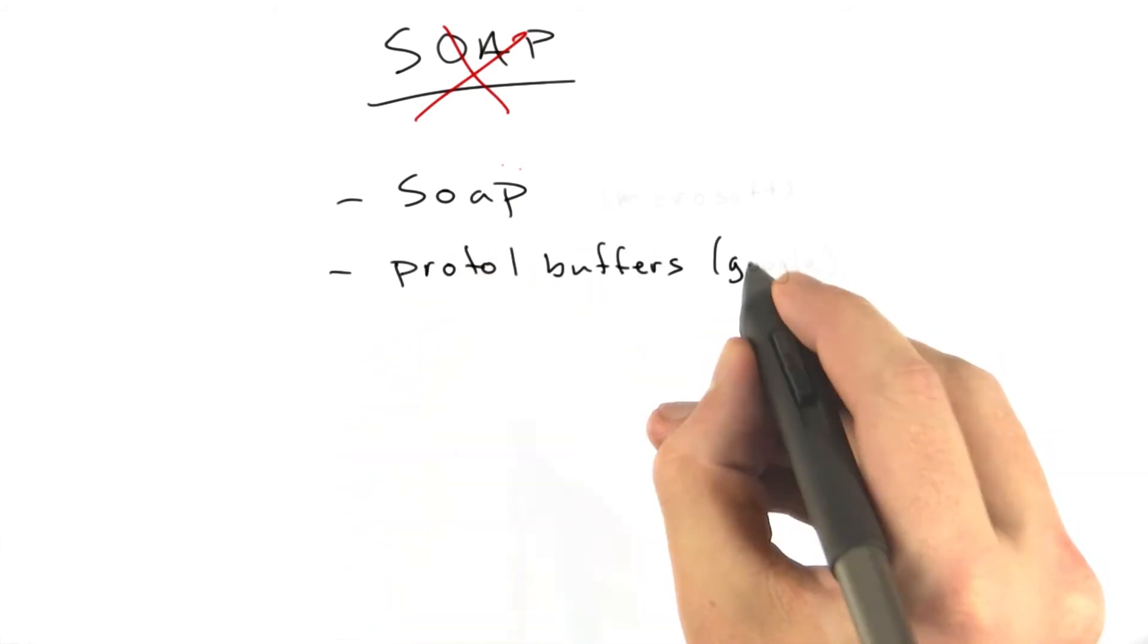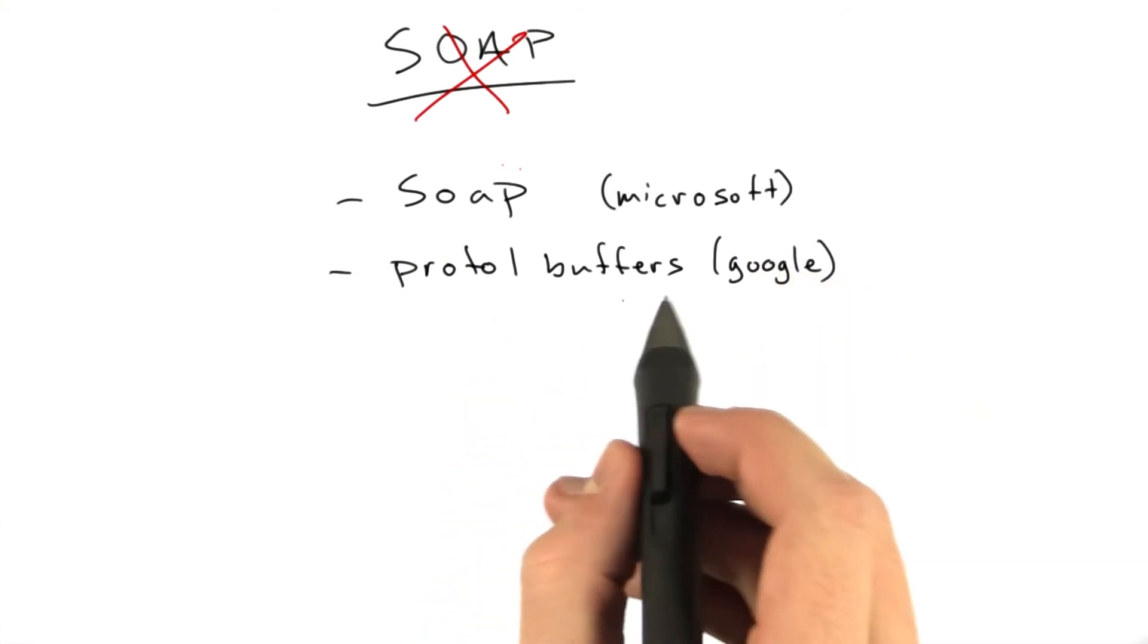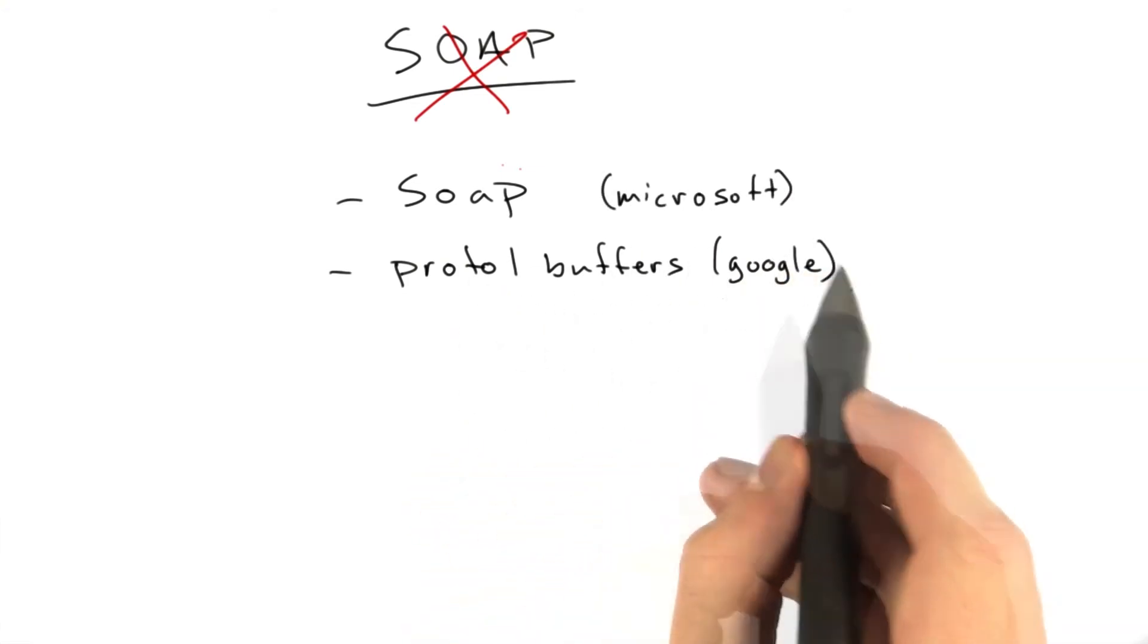We've got protocol buffers, which are from Google. It's similar in concept to JSON. It's a way of encoding different types of data for sending it over the wire.